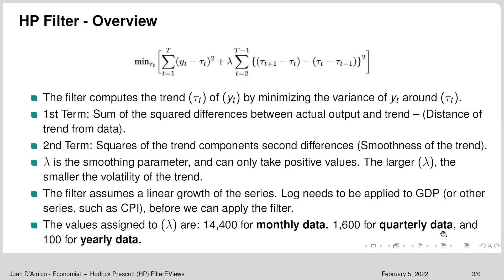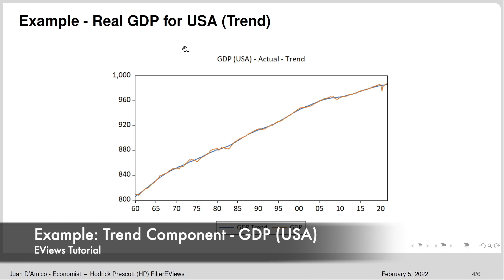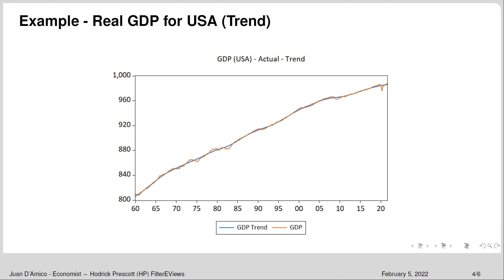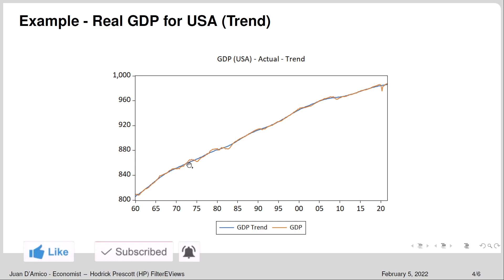Lambda is 1,600 for quarterly data and 100 for yearly data. I have applied the HP filter to the real GDP for the USA to decompose the series into trend and cyclical components. The blue line shows the trend, representing the long-run behavior of the series, and in orange is the actual GDP. There are periods where GDP is above the trend — those are periods of expansion.